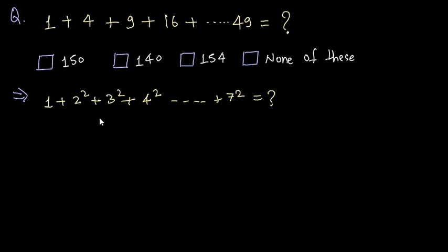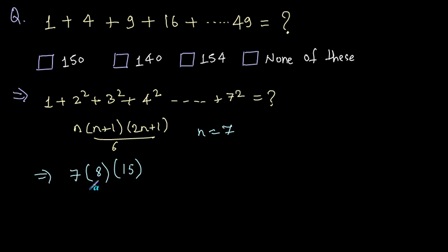Now we have a pattern that matches with formula number 2. The formula for a series of squares of natural numbers till n is n(n+1)(2n+1)/6 where n equals 7. Let's put the value of n in the formula. This becomes 7×8×15/6.